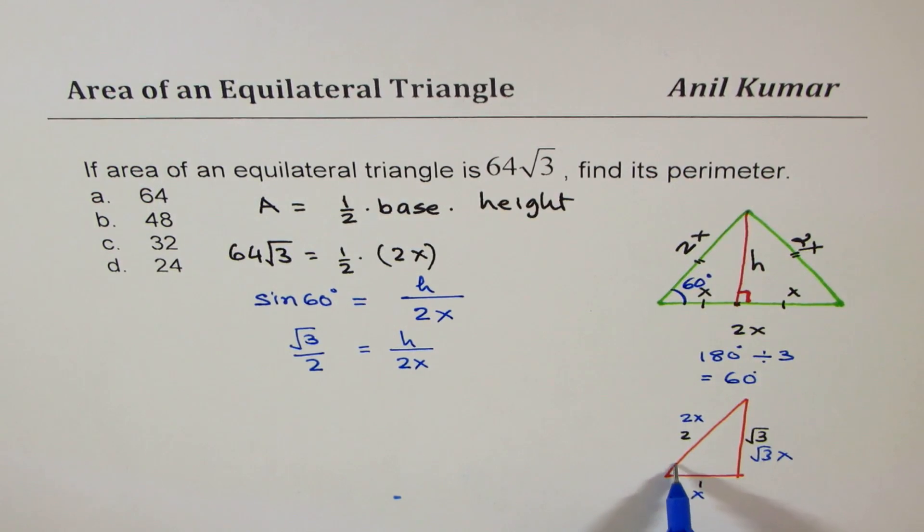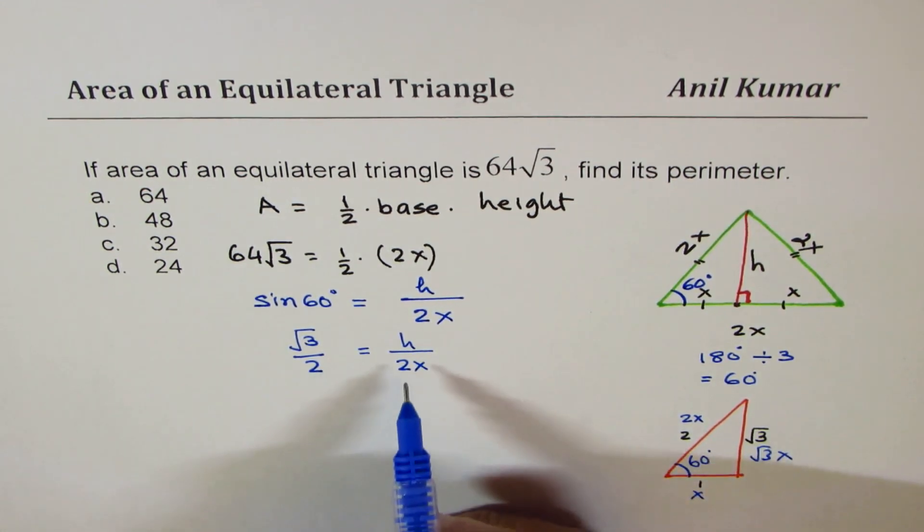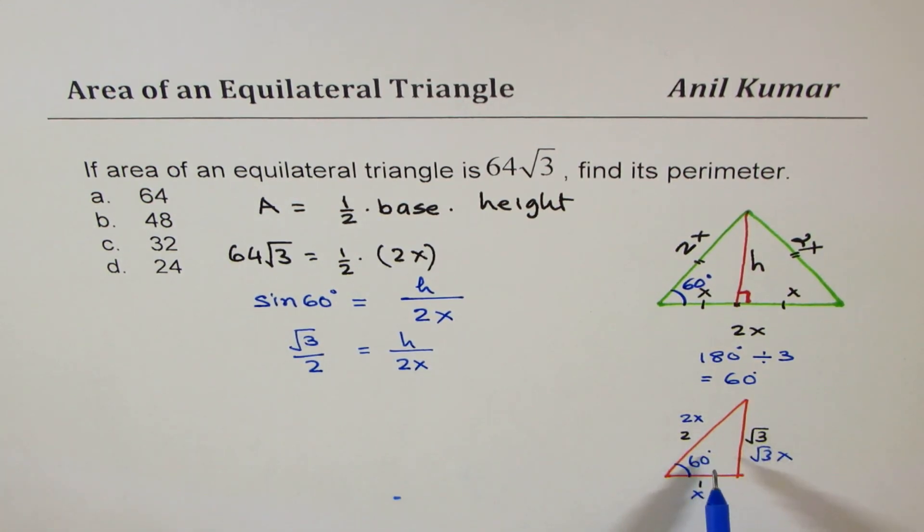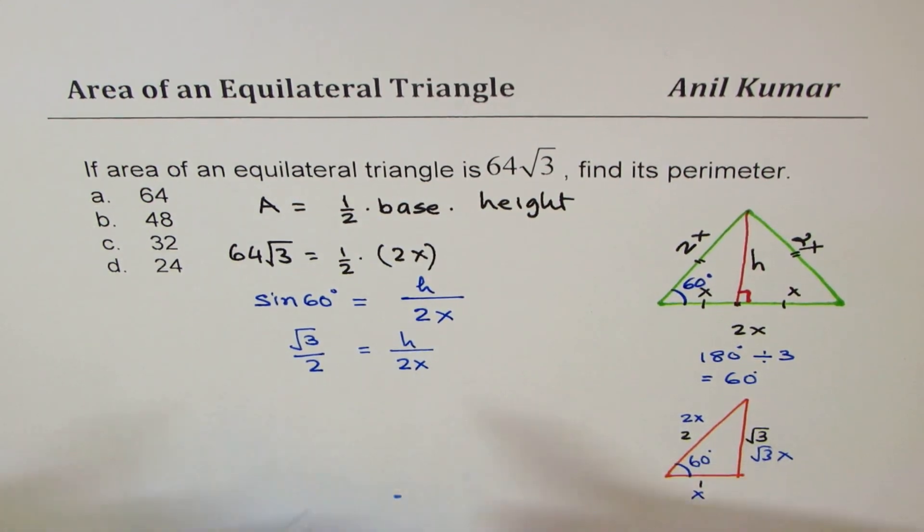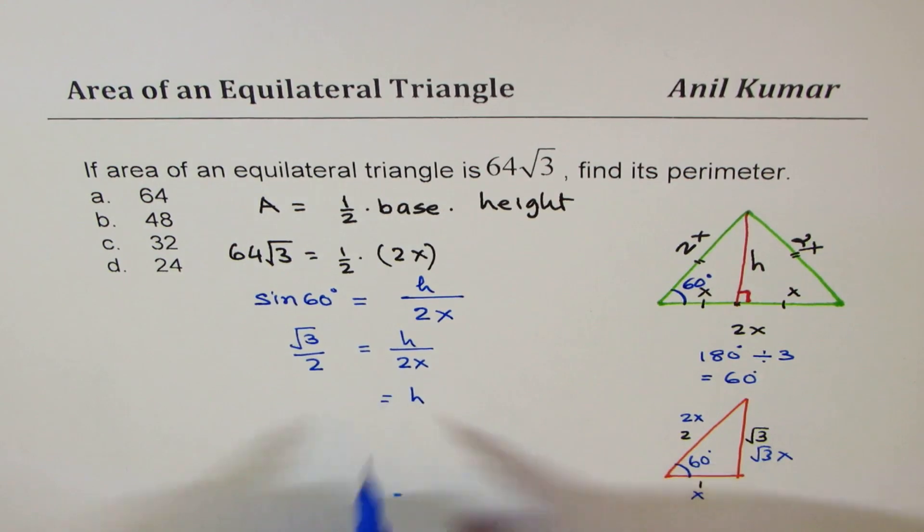So that means square root 3 over 2 is equals to h over 2x. Now if you know these special triangles, if this is 60 degrees, you could say square root 3 over 2, opposite over hypotenuse is sine. So you could have done directly from here. But let's assume that we don't know this, we'll adopt this method.